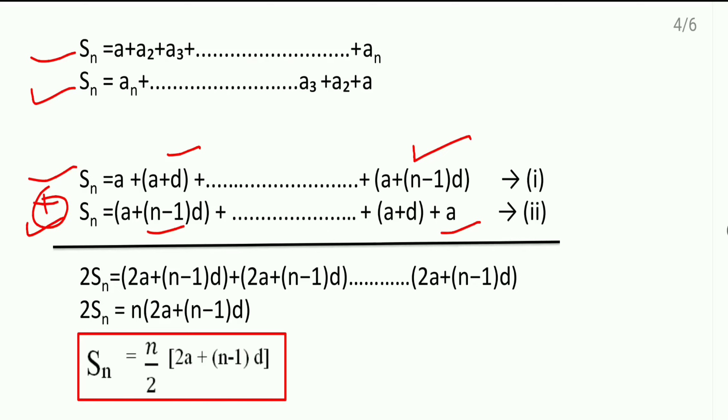Sum of n terms, we are getting two times here now. If we add the first term and this one, the addition comes as 2a plus (n-1) into d.